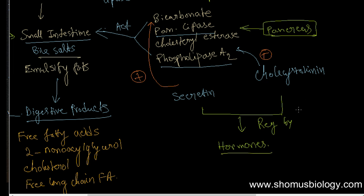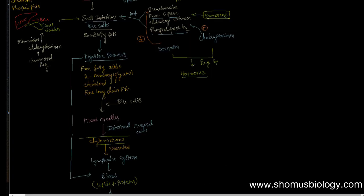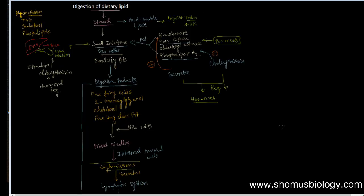So this is an overview of digestion of dietary lipid. Digestion starts in the stomach with the help of lingual lipase and is concluded in the small intestine with the help of pancreatic lipase, bicarbonate, and phospholipase A2. If we zoom out, we can clearly see the big picture of how dietary fat is digested.